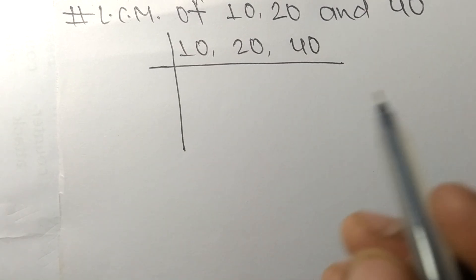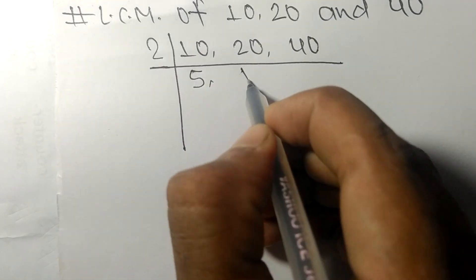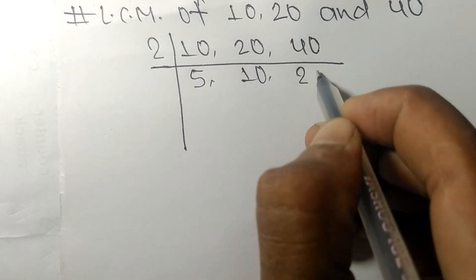These all numbers are divisible by 2. 2 times 5 means 10, 2 times 10 means 20, 2 times 20 means 40.